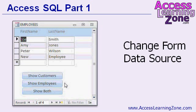Have you ever had a form that you wanted to use with multiple tables? Perhaps it just showed a list of people, but you've got employees, customers, and vendors. I'll show you how to make one form — in this case an employee form that shows first name and last name — but you can click on different buttons to show either customers or employees or both. We'll learn something called a union query, where you can put the results from two different tables together. That's how you change the form's data source with some custom SQL.